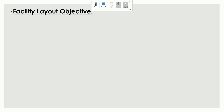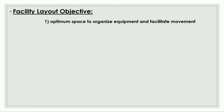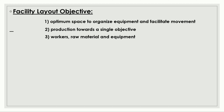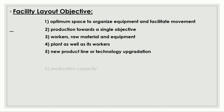Now, the objectives of facility layout. The first objective is to utilize optimum space to organize equipment and facilities, enable movement, and create a safe and comfortable work environment. The second objective is to promote order in production towards a single objective. The third is to reduce movement of workers, raw materials, and equipment. The fourth is to promote safety of the plant as well as its workers, and to facilitate changes in layout to accommodate new products, production lines, or technology. The last objective is to increase the production capacity of an organization.